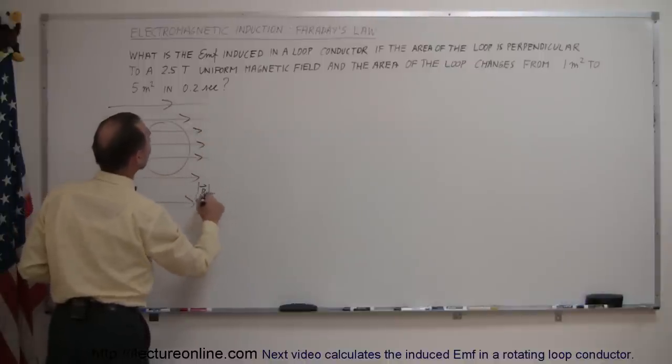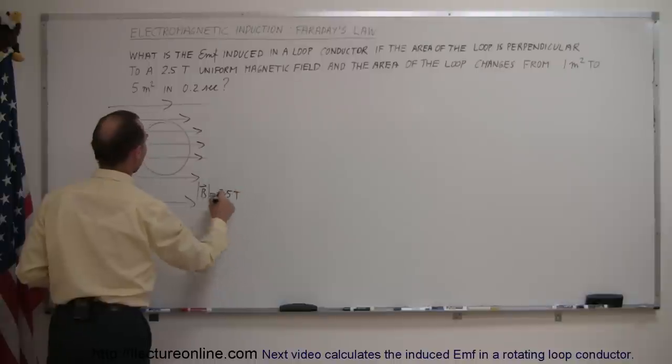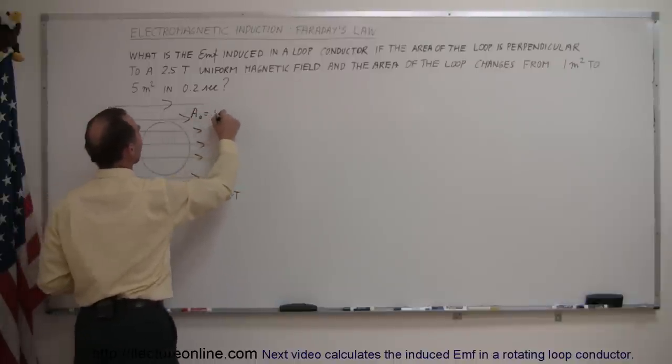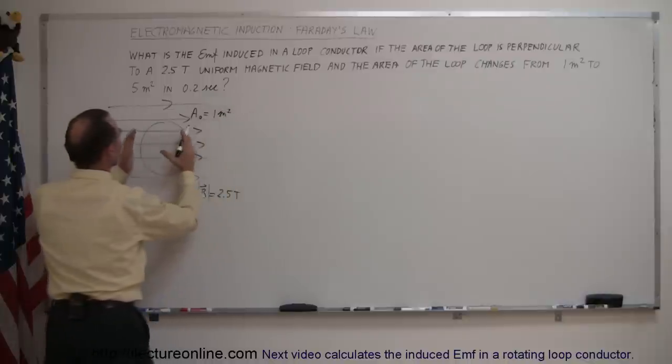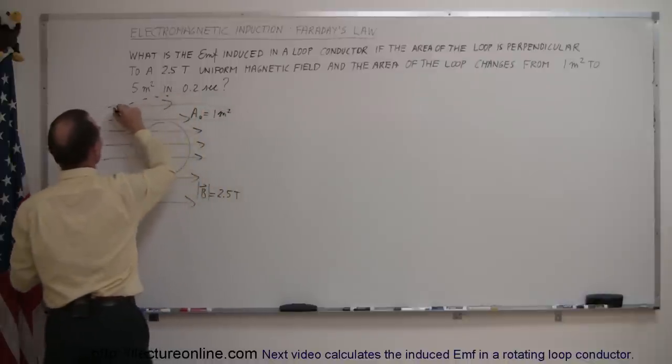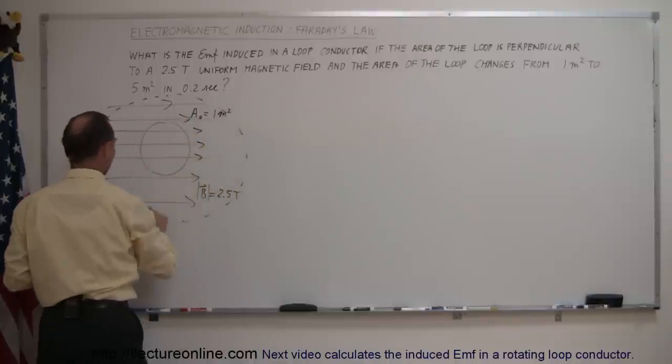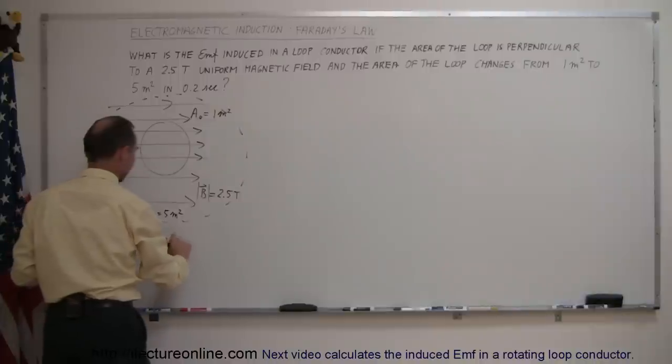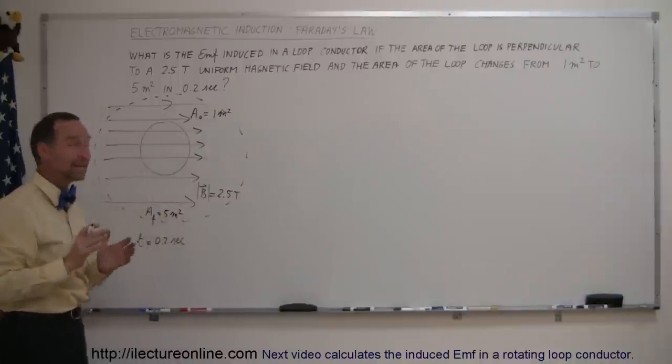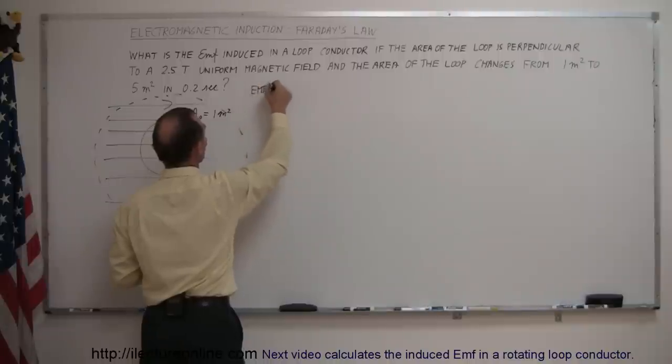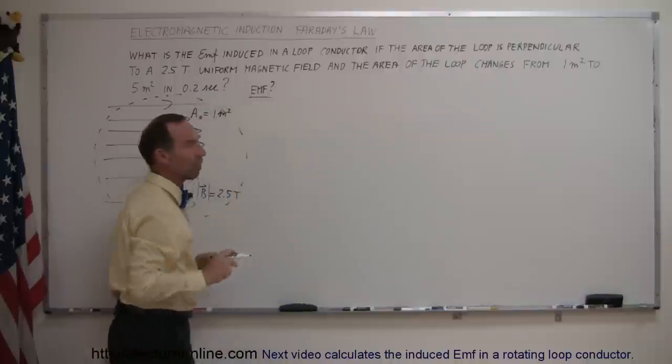The strength of the magnetic field is equal to 2.5 teslas, and the area initially of the loop is equal to 1 meter squared. And then we expand the loop quickly so that now the area is 5 square meters, so area final equals 5 meters squared, and the time elapsed is equal to 0.2 seconds. So how do we find the EMF induced?